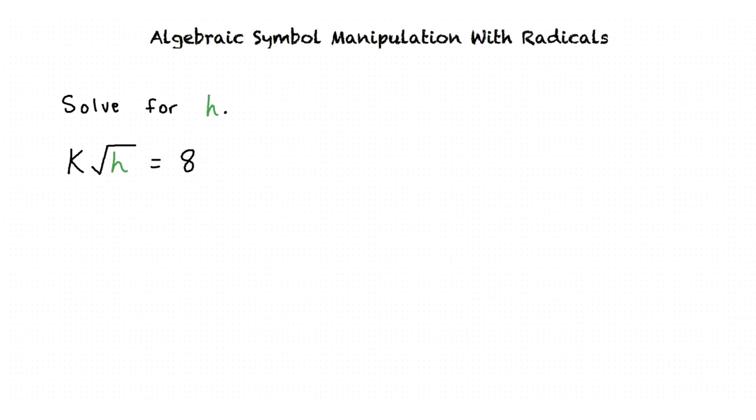Our first step is to divide both sides of the equation by k. The result is the square root of h equals 8 over k. We can see that h is inside of a square root — so how do we isolate h when this is the case?